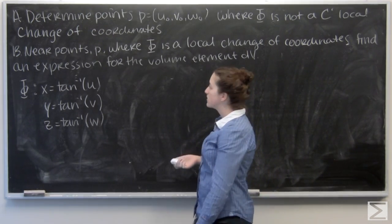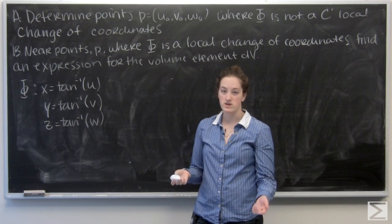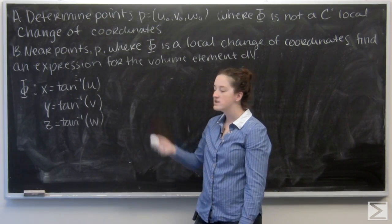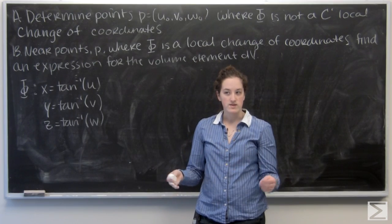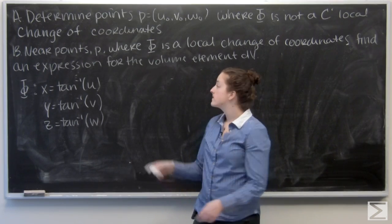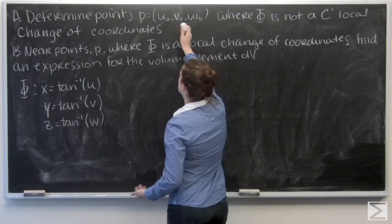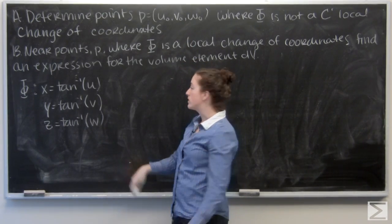So first off, we're asked to find points where this is not a local coordinate change. So arctan is continuous, differentiable. So the answer to a is actually nowhere. It is a local coordinate change at all points.